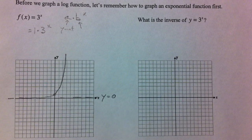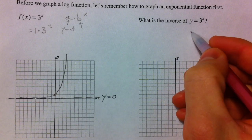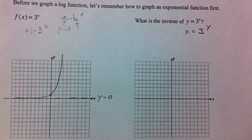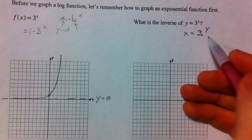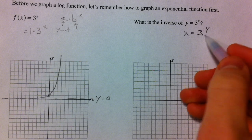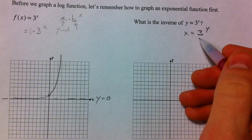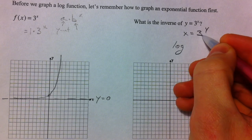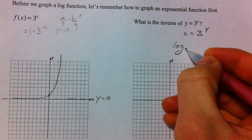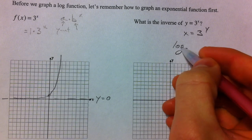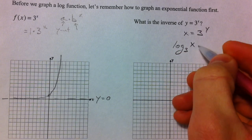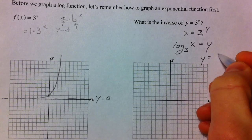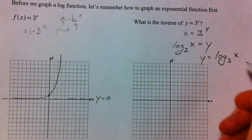So how do we find the inverse of 3 to the x? Well, first thing, swap the x and the y so we get x equals 3 to the y. Now to solve for the y again, we're going to need to take it and write it in log form. And so this is going to be log, and the base of our exponent becomes the base of our log. So log base 3 of our x equals y, or if you want, y equals log base 3 of x.